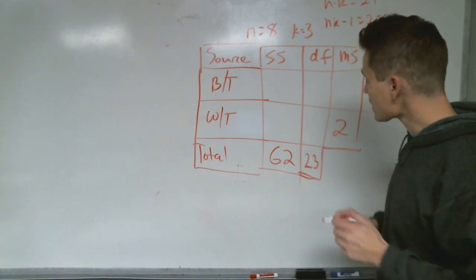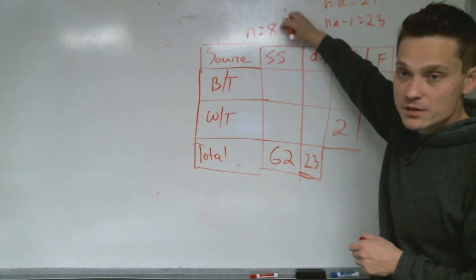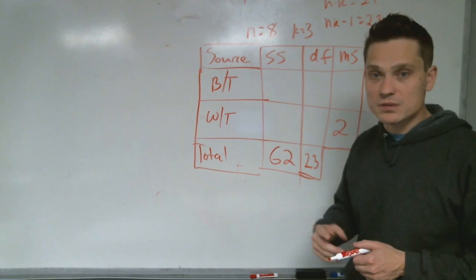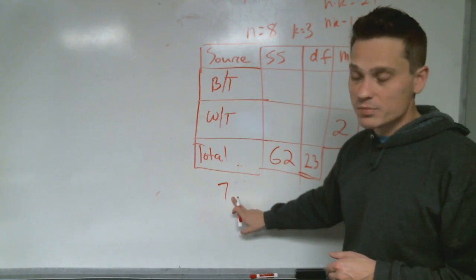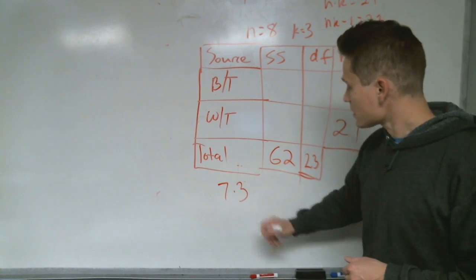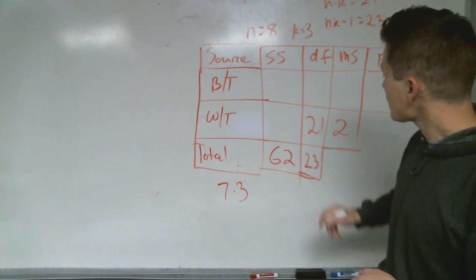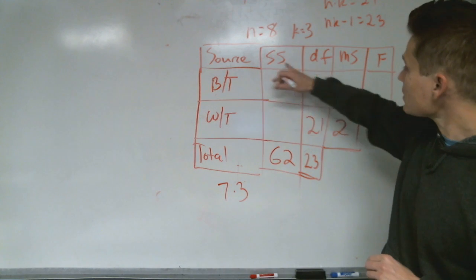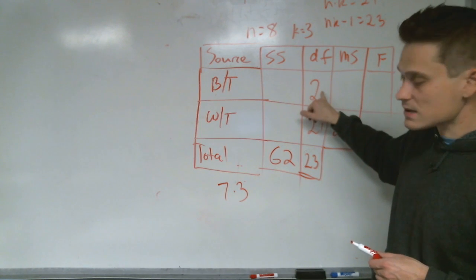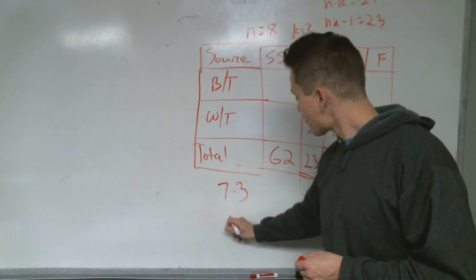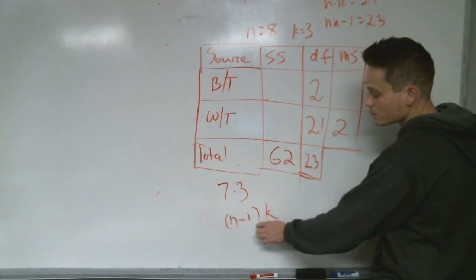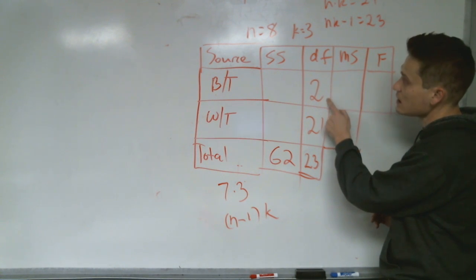Now, if you have 8 participants per group, then you have 7 degrees of freedom per group, and you multiply this by 3, which is the number of groups. So it's 7 degrees of freedom per group by the group average, multiplied by the number of groups — that gives you 21 degrees of freedom for within. Which means for between the groups, you have 2 degrees of freedom. In other words, k minus 1 goes in the between cell, and n minus 1 times k goes in the within cell.